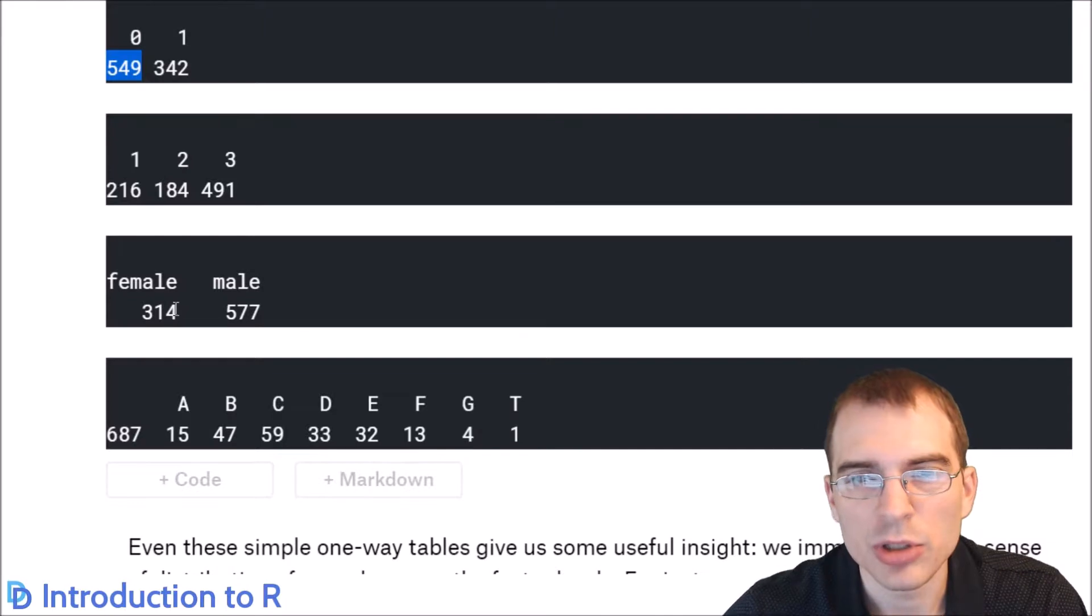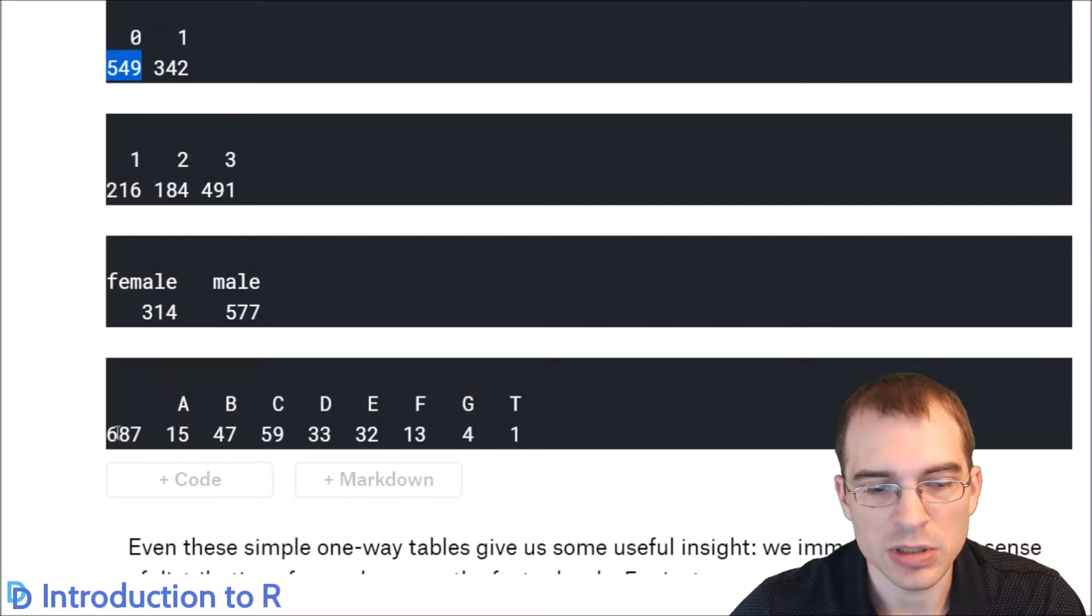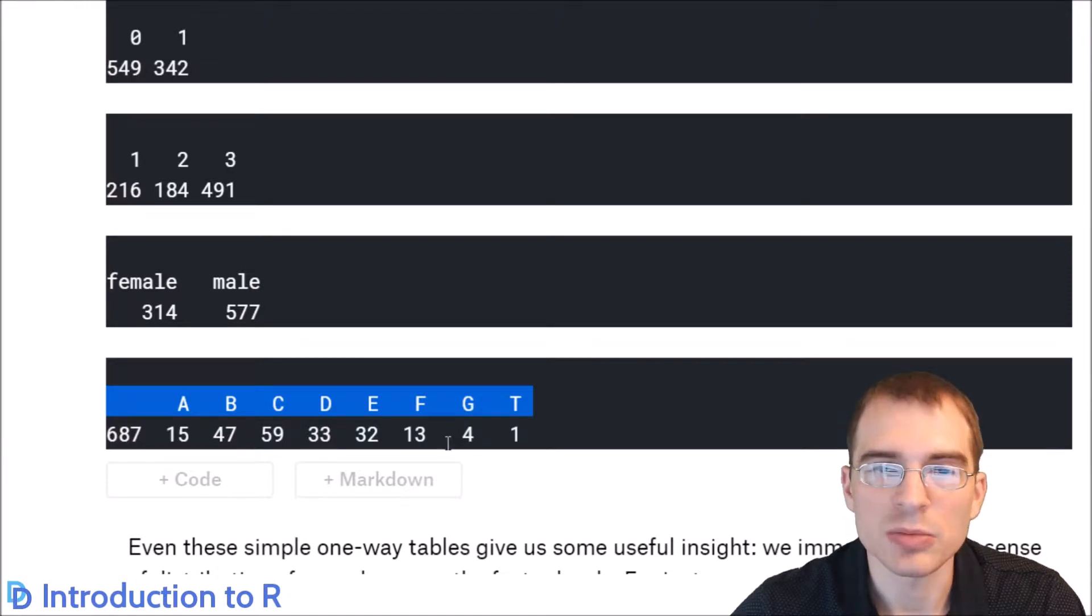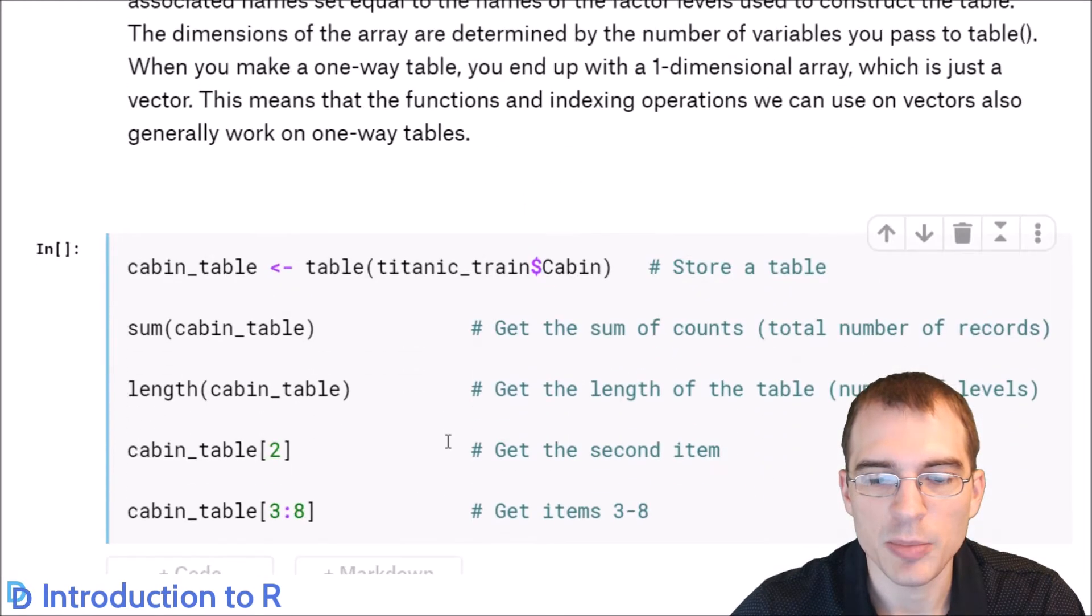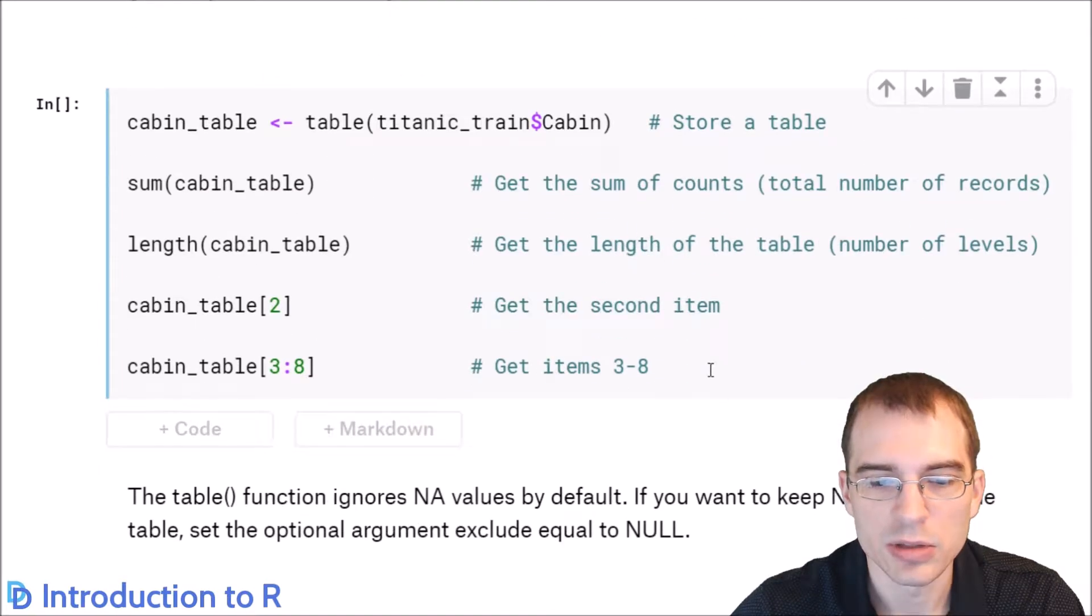Now, when you run the table function in R, it creates essentially an array of integers where each integer is given an index name of whatever the category is. For instance, in this cabin table, all of these counts are just integers, and then the cabin names up here are the indices. So since they're stored in that fashion, we can use vector indexing operations that we've learned earlier.